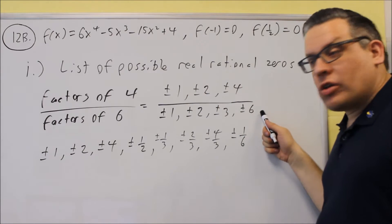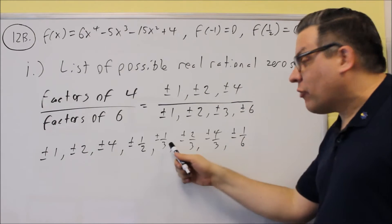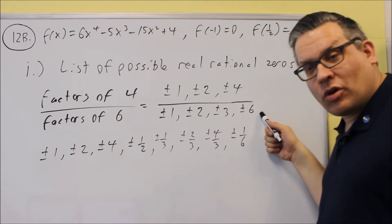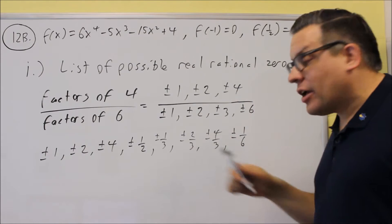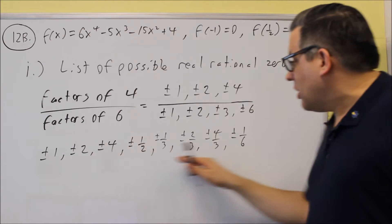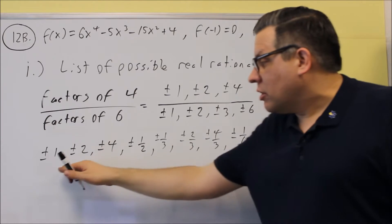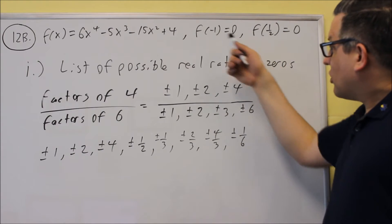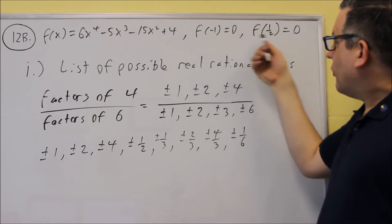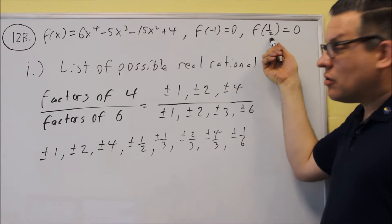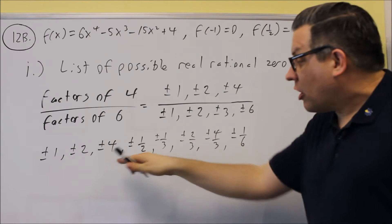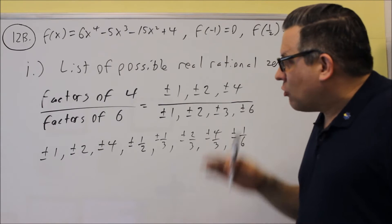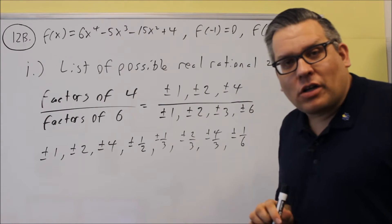Two sixths is one third — already on the list. Four over six is two thirds — already on the list. So this is your complete list. Notice that two of the values already given to us automatically appear on our list, and that's what we do for part one.